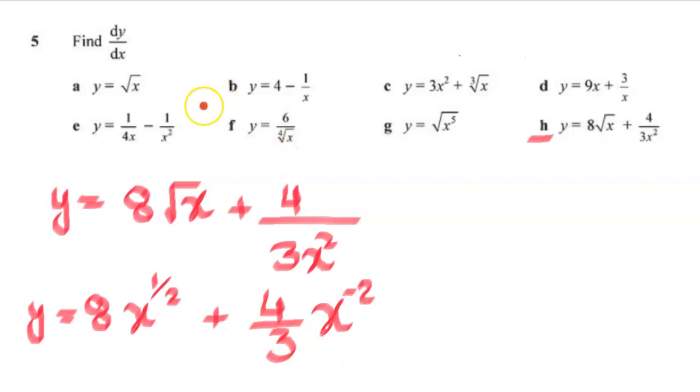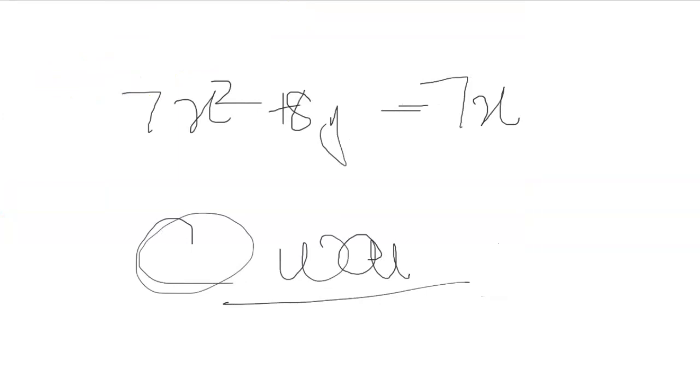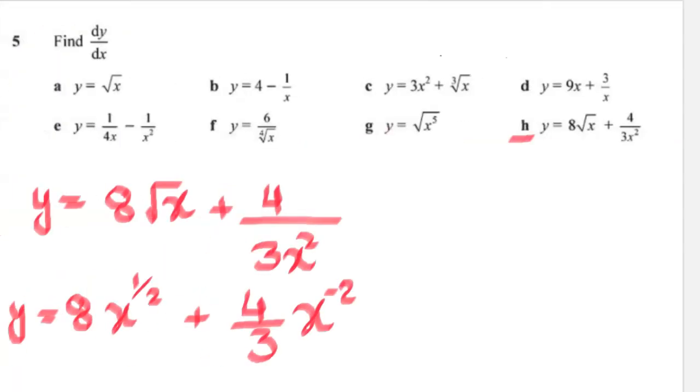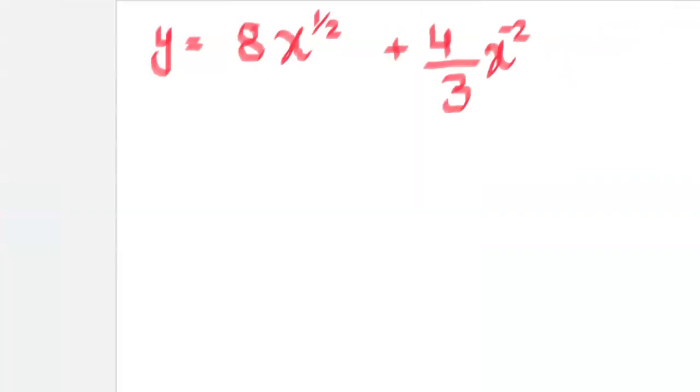Now once I got this bit, I need to actually differentiate that. So to differentiate, if I rewrite this thing, y equals 8x to the half, so I'm just copying the previous one, plus 4 over 3x minus 2. Let's check if I copy it right. Yeah, that's right.